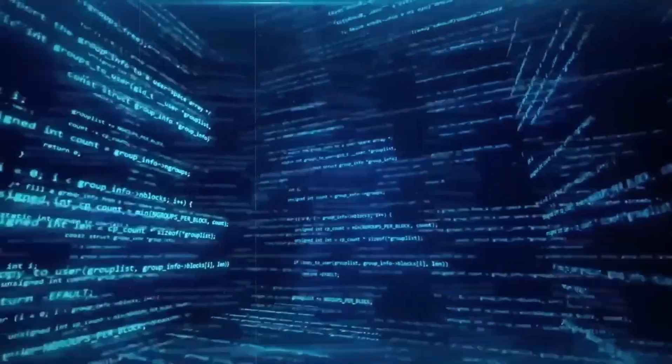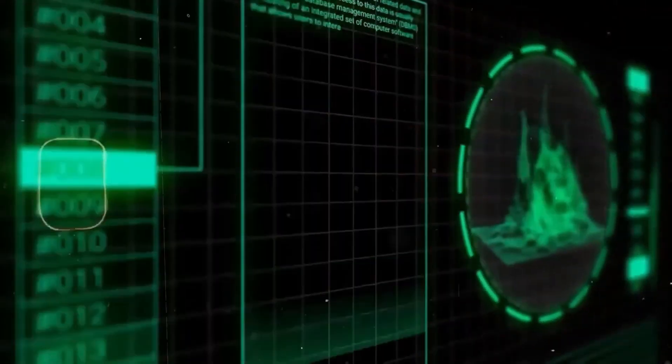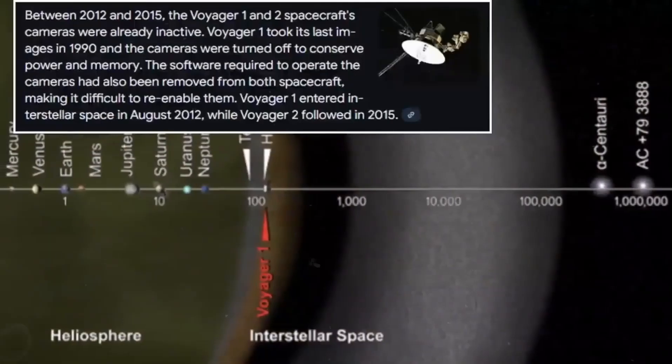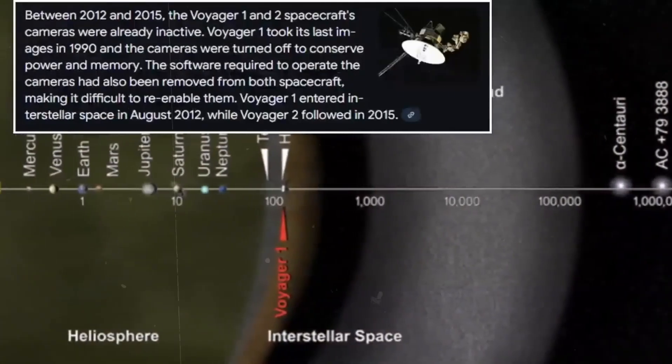The origin of the data was confirmed. It came from Voyager 1, transmitted back to Earth as part of routine interstellar measurements. However, the signal structure was far from routine.